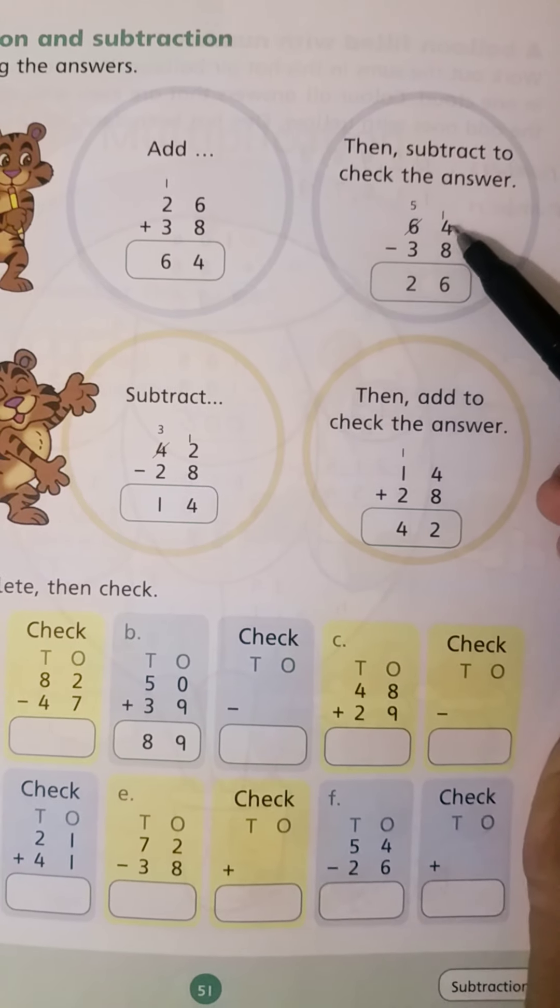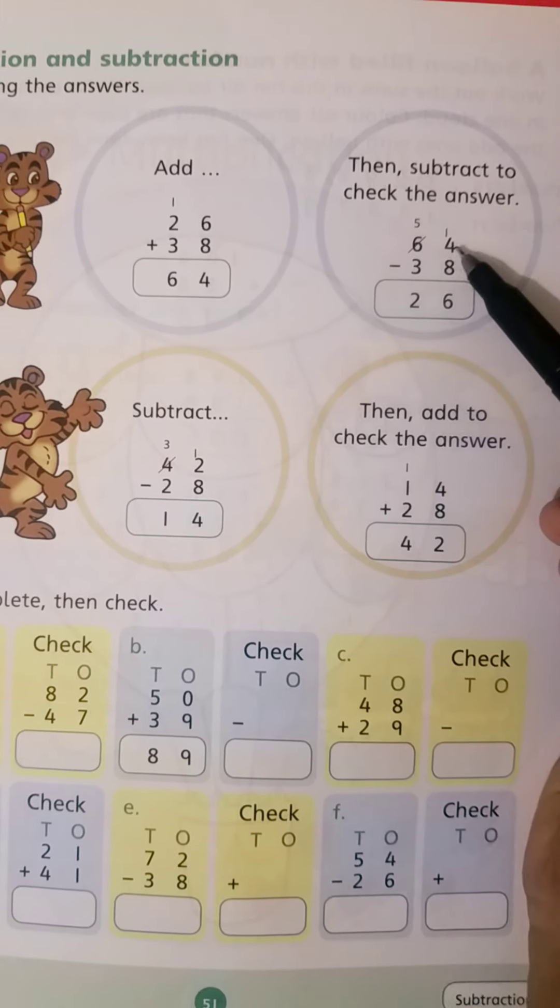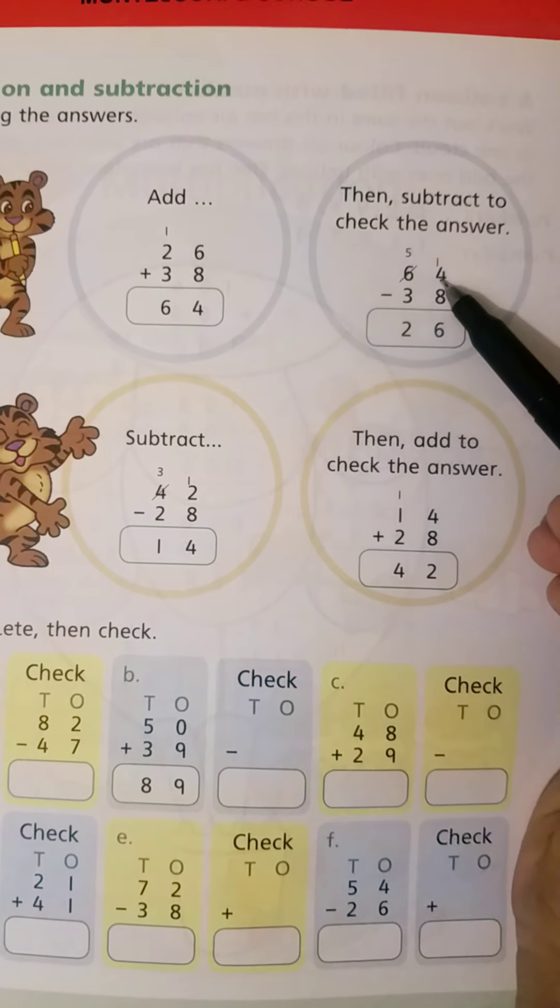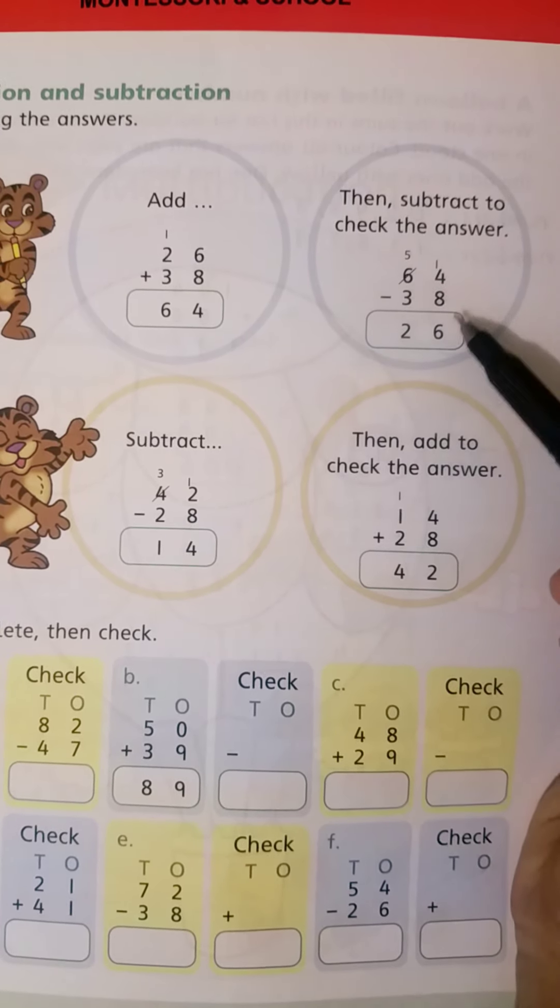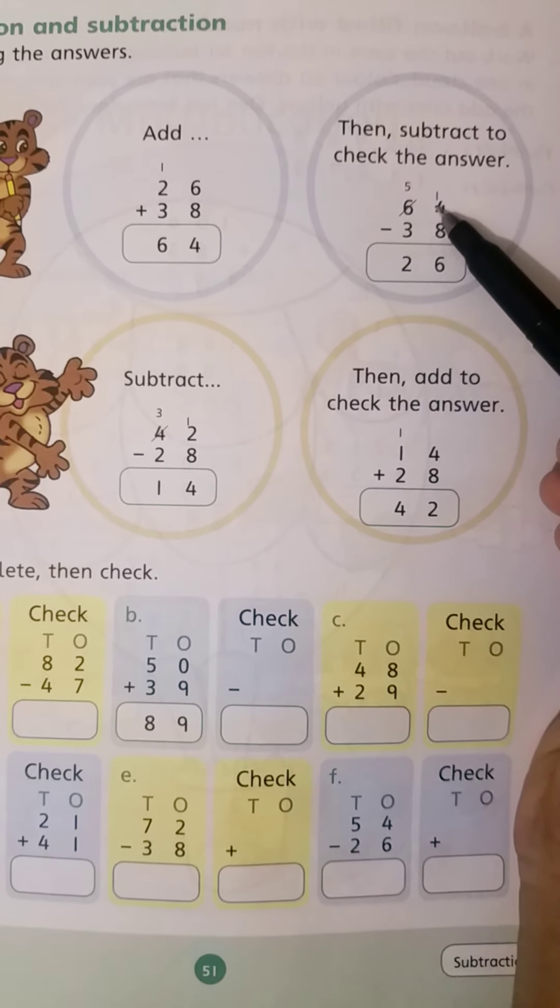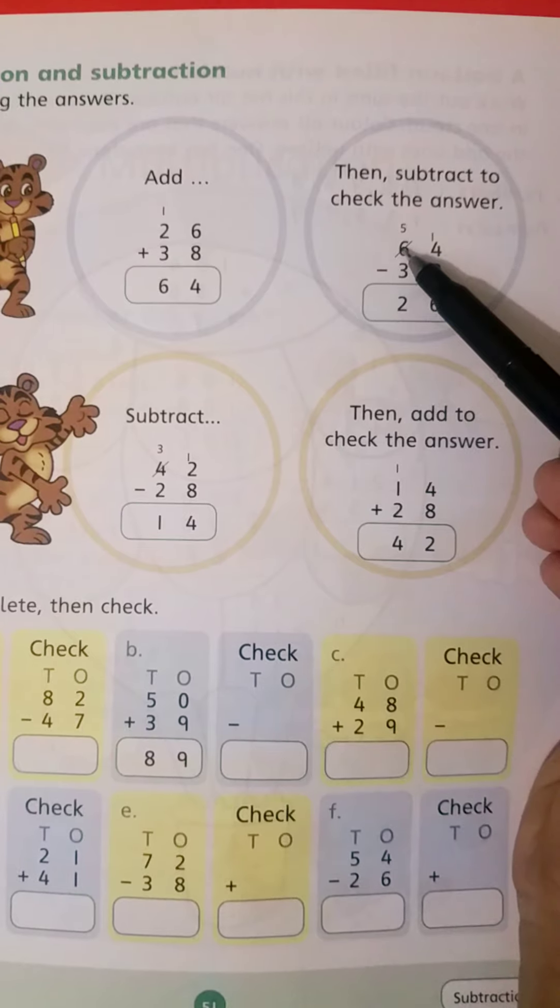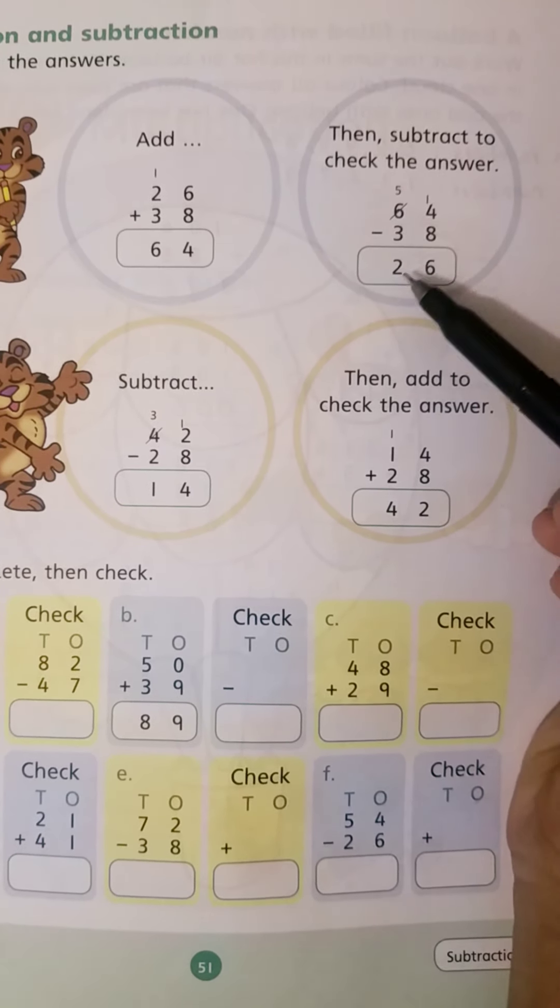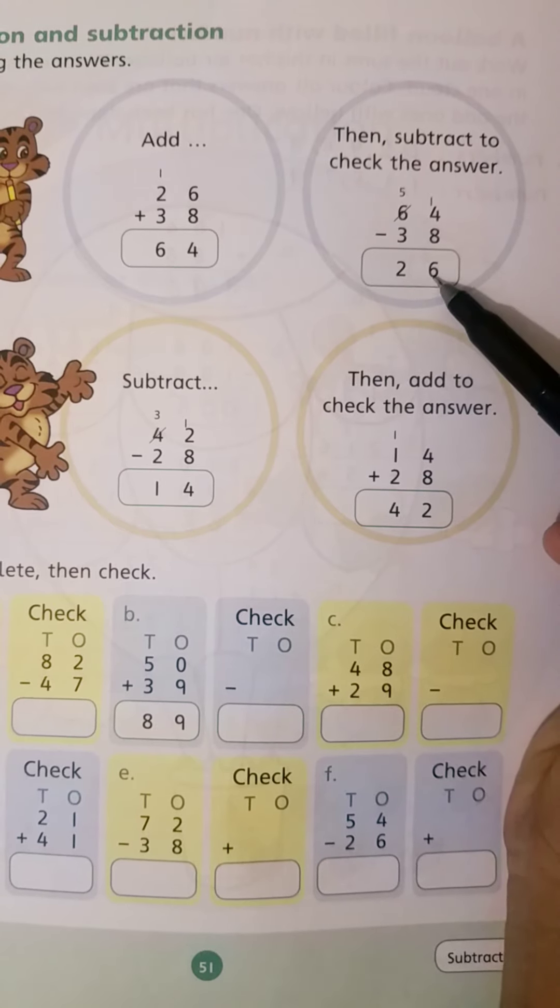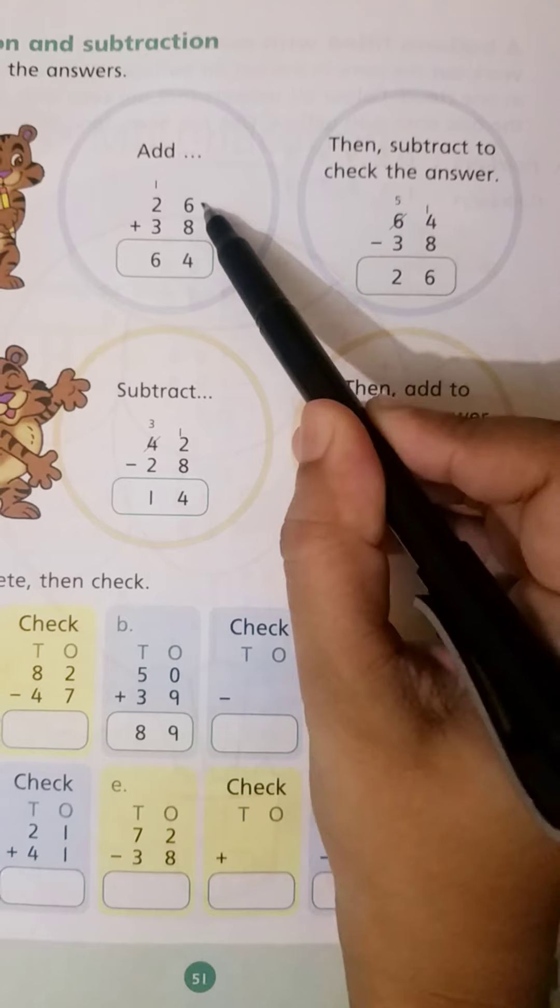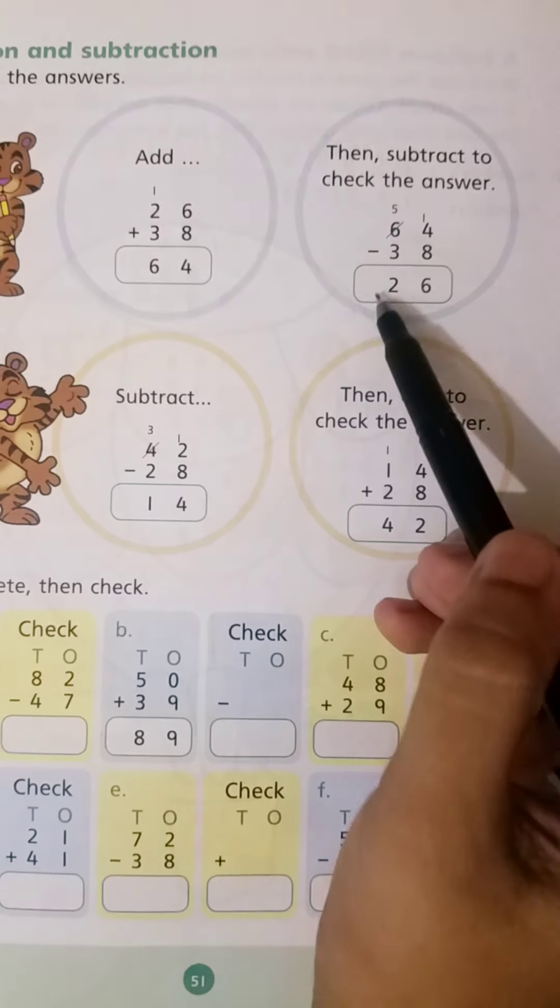Now start from 1's place. 4 minus 4... we need 14. Cut, now take carry from the next number, it makes 14. 14 minus 8 is 6. The remaining number is 5. 5 minus 3 is 2. Answer is 26, and 26 is the first number.